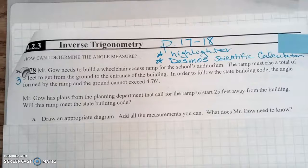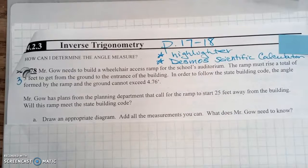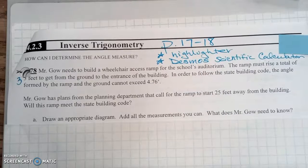Lesson 4.3 is titled Inverse Trigonometry. We're going to be looking at pages 17 and 18. If you have a highlighter, pull out your highlighter. If you have your own calculator, great. If you don't have your own calculator, you're going to be using the Desmos Scientific Calculator.